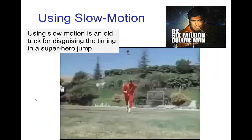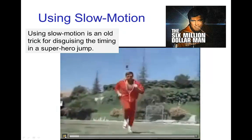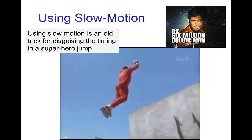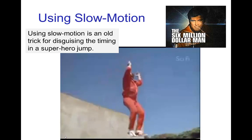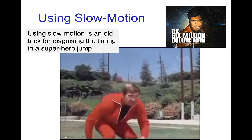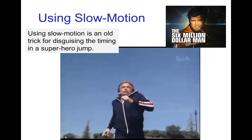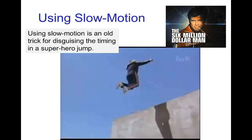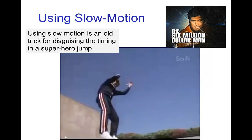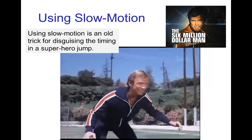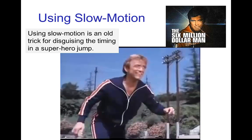One old trick to disguise the timing for a superhero jump is to use slow motion. This was commonly done for sequences in the Six Million Dollar Man — a bionic character with very impressive jumps. We don't really see what the timing is because slow motion is used to imply everything is happening extremely fast, and that disguises the timing.